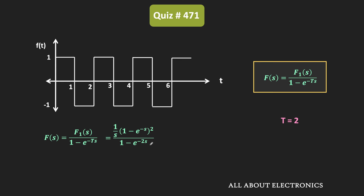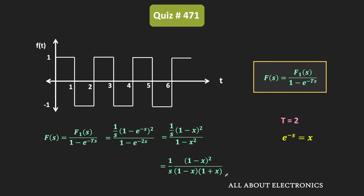Again, let x = e^(-s). We can write this expression as (1/s)(1 - x)² / (1 - x²). In the denominator, expanding 1 - x² gives (1 - x)(1 + x). So the (1 - x) terms in the numerator and denominator cancel out, leaving (1/s)(1 - x) / (1 + x).